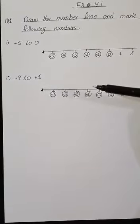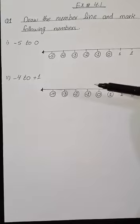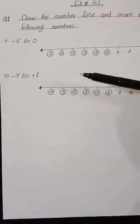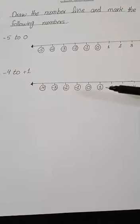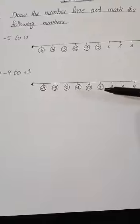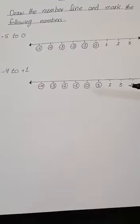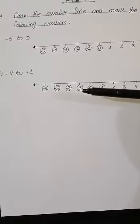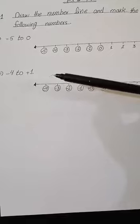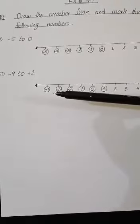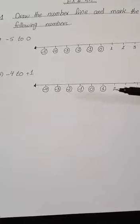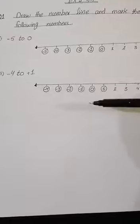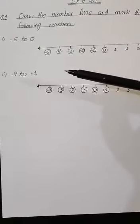We have to circle or mark those numbers from minus 5 to plus 1. In this question, both positive and negative numbers are included. So first of all, we have to draw the number line, writing positive numbers on the right side and negative numbers on the left side. Then, according to the question — minus 4 to plus 1 — we start moving from minus 4 to plus 1. These numbers are circled because only these numbers are demanded in the question.